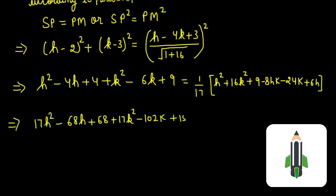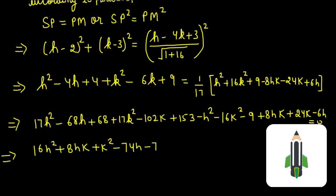After solving this, we will get the remaining equations. Now, 16h² + 8hk + k² - 74h - 78k + 212 = 0.